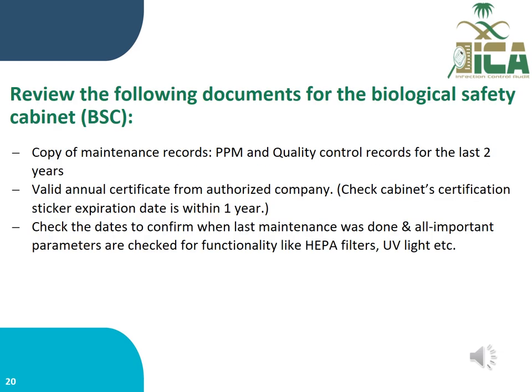Review the following documents for the biological safety cabinet: copy of maintenance records, preventive maintenance and quality control records for the last two years, and a valid annual certificate from an authorized company. Check the cabinet certification sticker expiry date to confirm it is within one year, confirm the date of last maintenance, and verify that all important parameters such as HEPA filter and UV light functionality are checked.